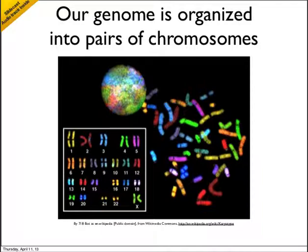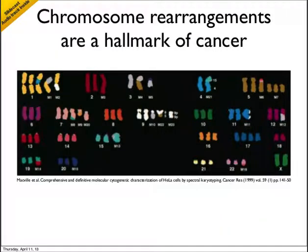Our genomic DNA comes in segments called chromosomes. In a dividing cell the DNA is condensed into these tube-like structures, but after division they decondense in the newly formed nucleus and fill the space as separate territories. All chromosomes come as pairs, one from each parent. This organization is maintained in healthy cells, but changes to the number of chromosomes or rearrangements to their structure known as translocations are a hallmark of serious diseases like cancer.